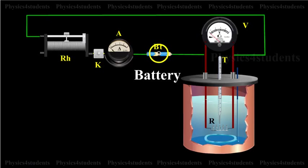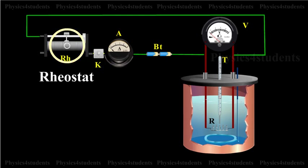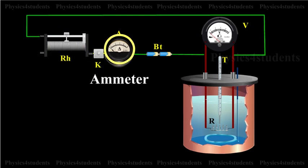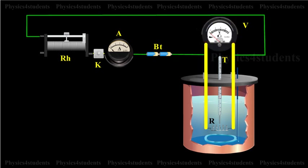A battery B, a key K, a rheostat RH and an ammeter A are connected in series with the calorimeter. A voltmeter V is connected across the ends of the coil R.